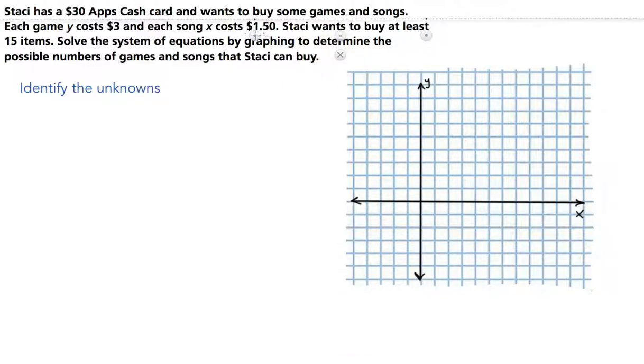In this case, we're trying to find games and songs to buy. The variables are listed: game Y and songs are X. So X equals number of songs and the variable Y equals number of games.